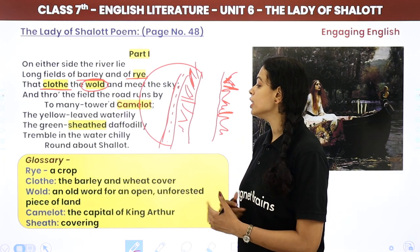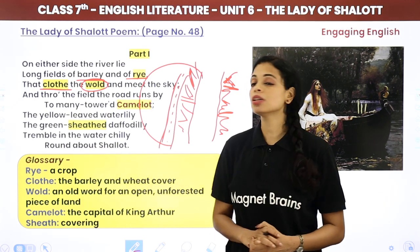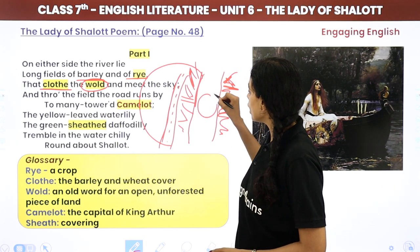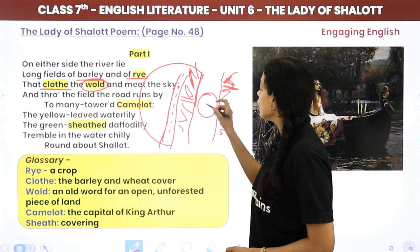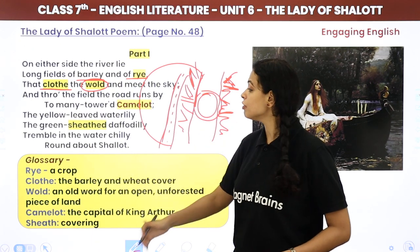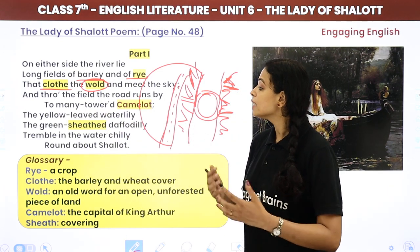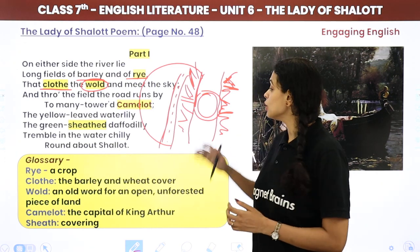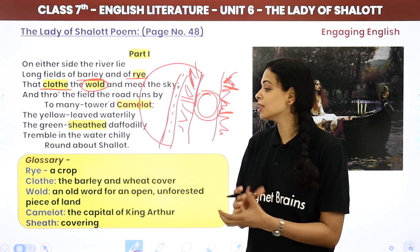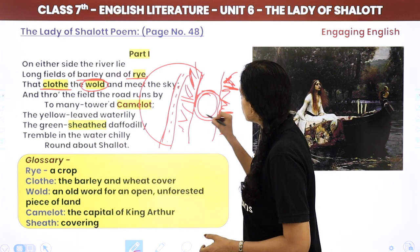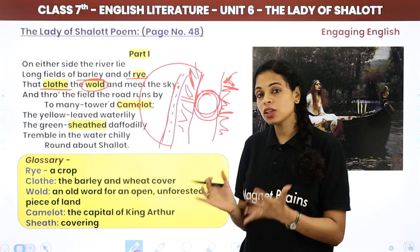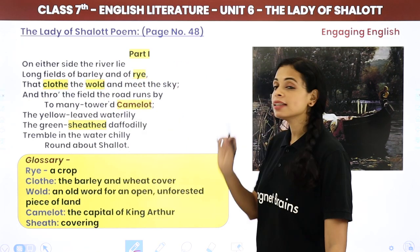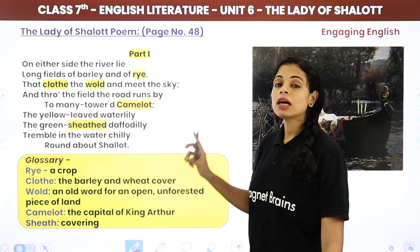'The yellow-leaved water lily, the green-sheathed daffodil, tremble in the water chilly, round about Shalott.' Here the poet describes that around the island of Shalott — a small island in the middle of the river — there are flowers like yellow water lilies and green daffodils. They tremble in the cold water. Now can flowers actually tremble? No — trembling is a human quality, so here the flowers have been personified as if they are trembling in the chilly water around the island.